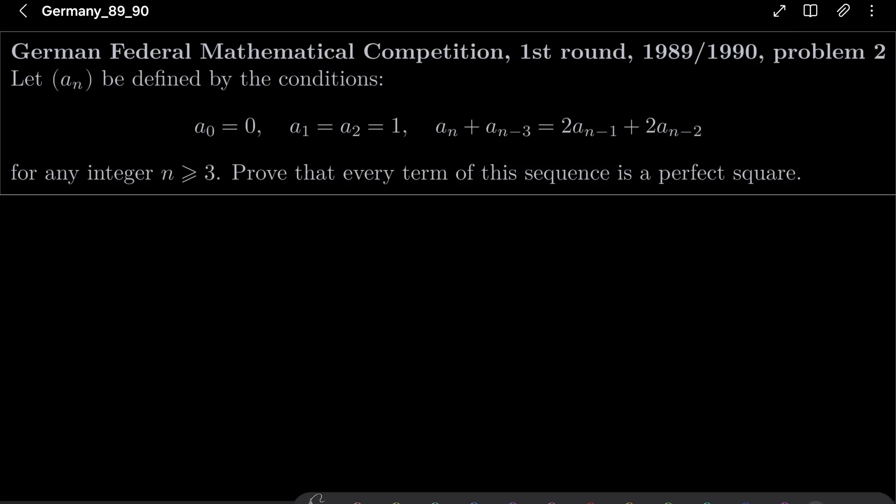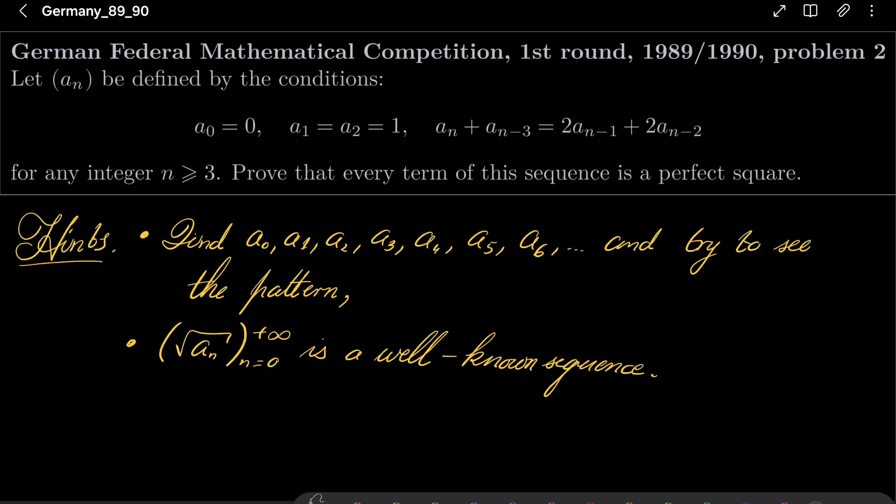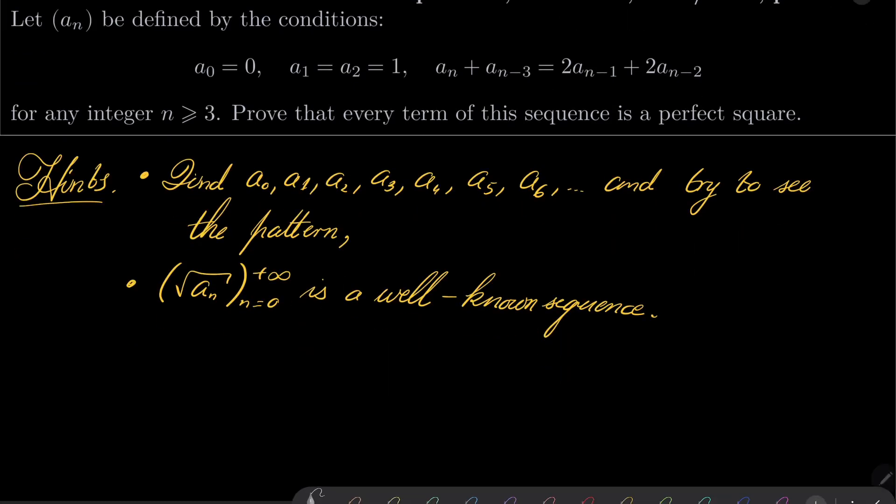So it's a very nice problem. Here are my hints. Try writing down the terms of our sequence by our recursion and try to see the pattern. I won't spoil it for you, but square roots of our sequence is a well-known sequence with a well-known recursion. You should recognize this easily. So give this problem a try.